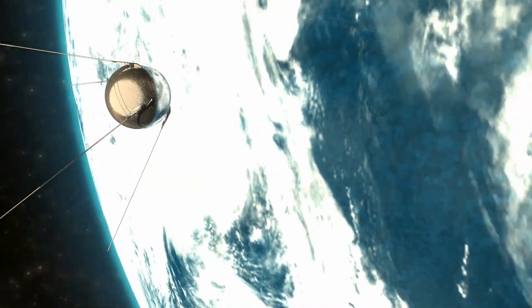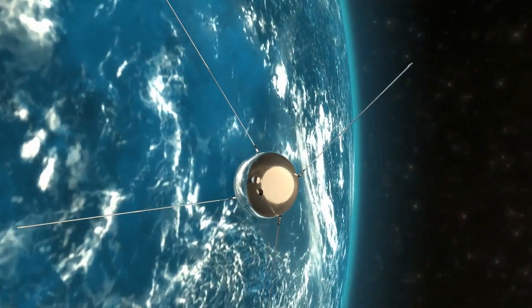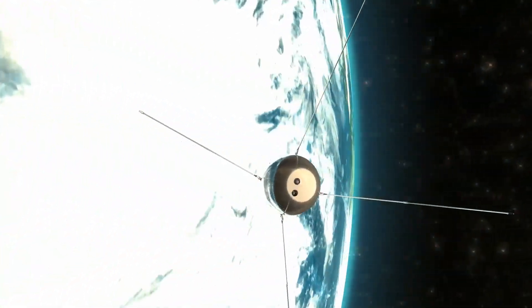While Voyager 2 was launched first, on August 20, 1977, Voyager 1 was launched on September 5, 1977, on a faster and shorter trajectory.